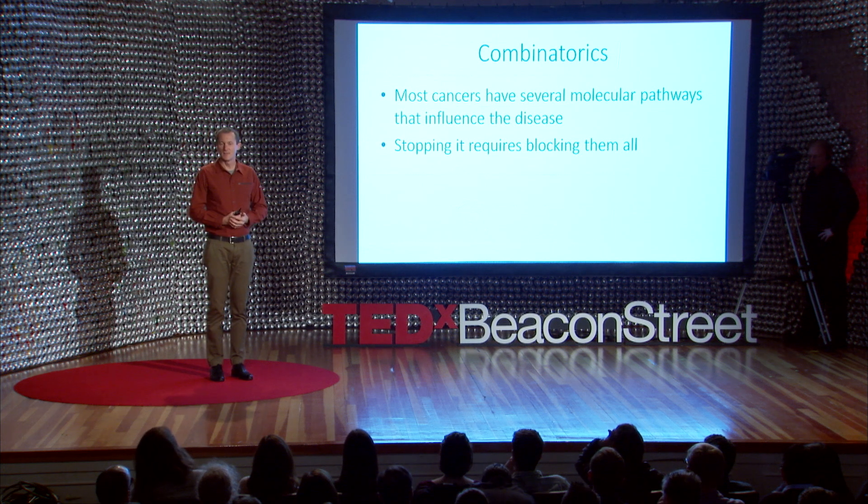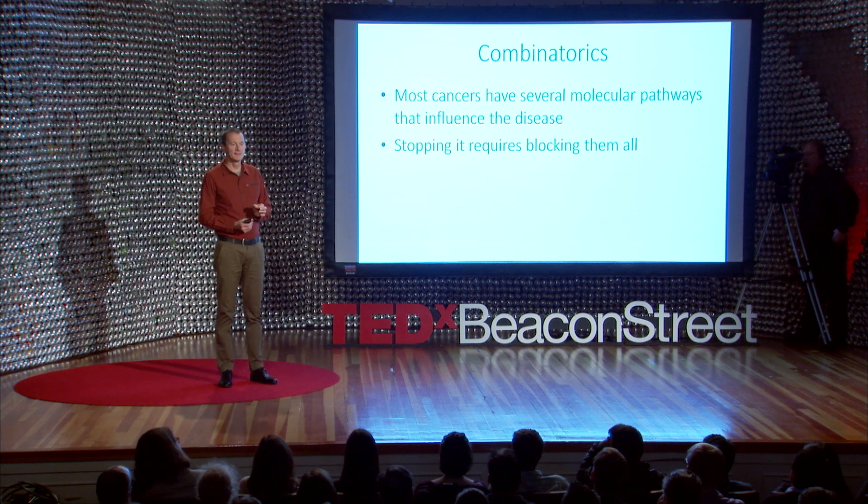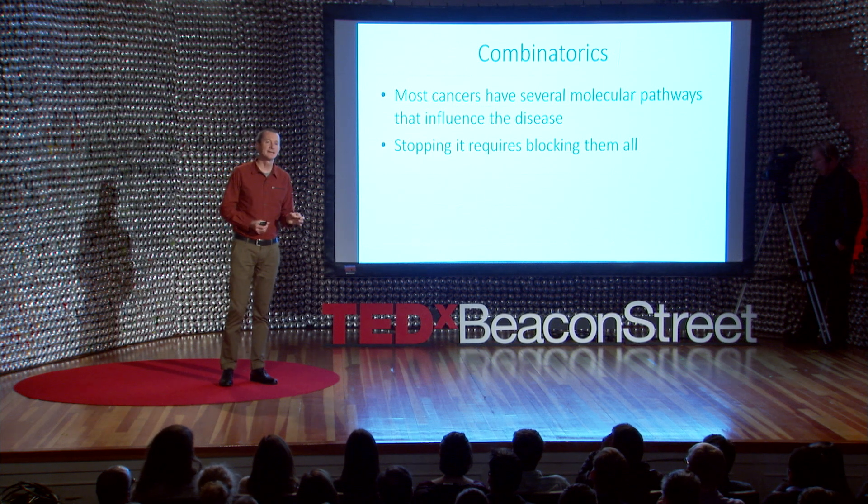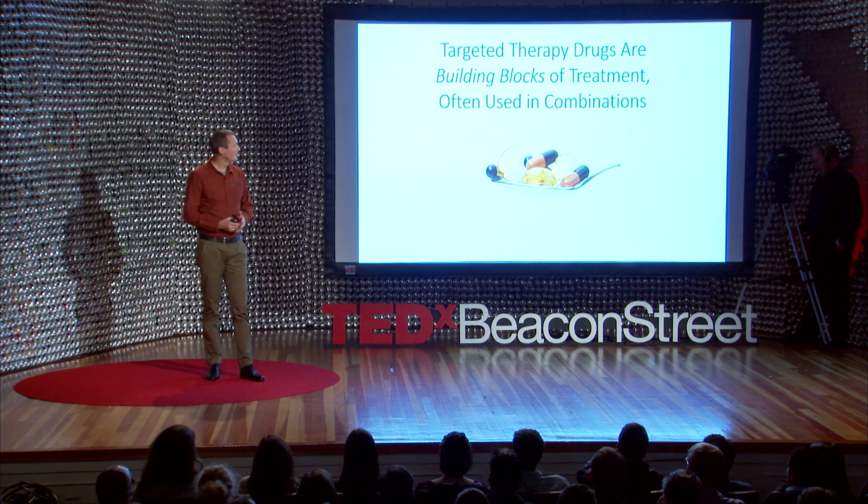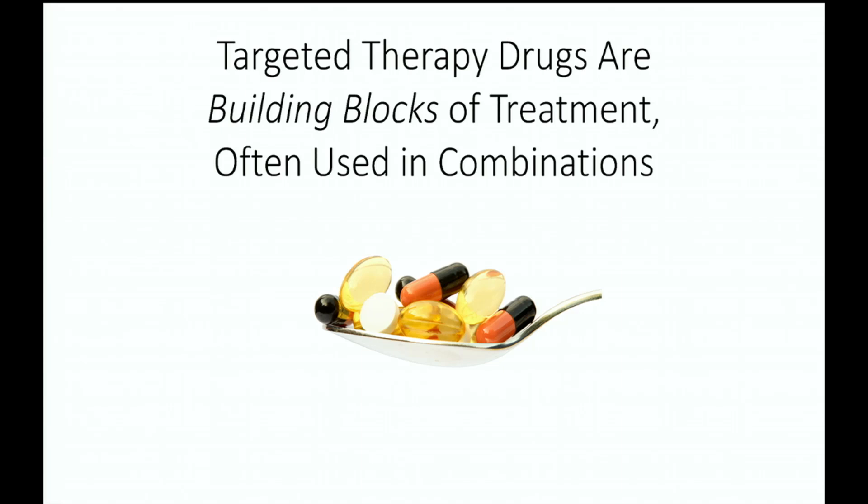The problem gets even worse. Most cancers exploit several different molecular pathways, and so these wonder drugs that target specific pathways are generally accepted now to be the building blocks of a cocktail treatment — you need to take two or three different drugs to block all the pathways your cancer is using. There are about a hundred different targeted therapies approved and available. The most well-known is Gleevec, which tackles liver cancer, approved in 2001. That makes 10,000 pairwise combinations and a million triples. If we're exploring all combinations of pairs and triples of drugs for use against thousands or tens of thousands of cancers, the number of combinations is just immense. We're never going to solve that by enrolling clinical trials of 10,000 patients at a time. We need a different method.